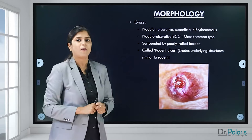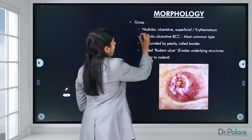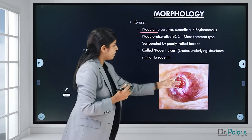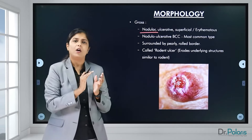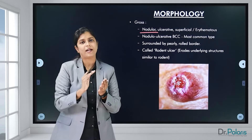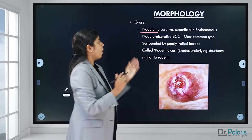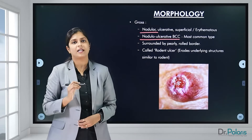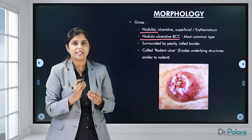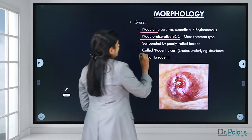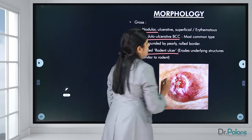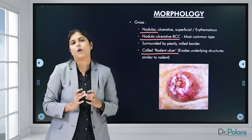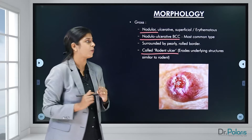Morphologically, basal cell carcinoma can be nodular, or later ulcerate to form ulcerative lesions. It can also be superficial, erythematous (reddish in appearance), or nodulo-ulcerative — which is the most common type. The nodulo-ulcerative form is called a rodent ulcer because it erodes underlying structures just like a rodent. These lesions are surrounded by characteristic pearly rolled borders.